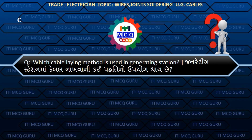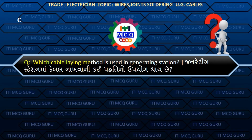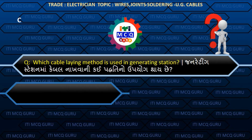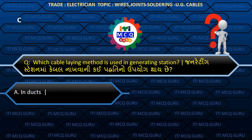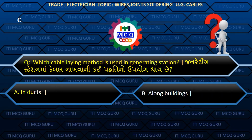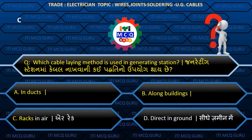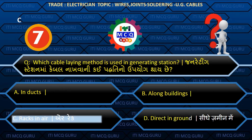Which cable laying method is used in generating stations? (Generating station maa cable naakwa ni kai paddhati noo uphyog thai chhe?) Answer C: Racks in air.